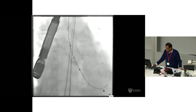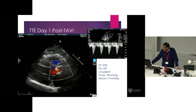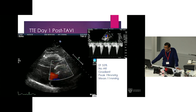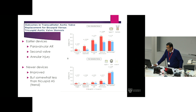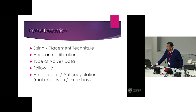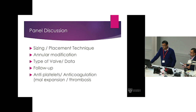On day one post-procedure, the transthoracic echo shows probably trivial to no aortic regurgitation. There was a residual gradient of a peak of 19 and a mean of 11. Any comments from our panel on this case? This is a very challenging case.